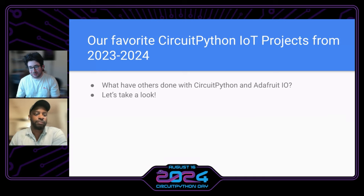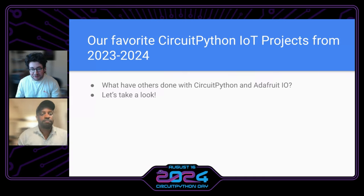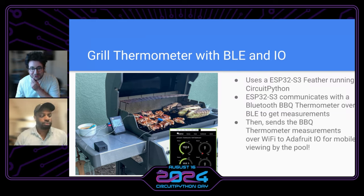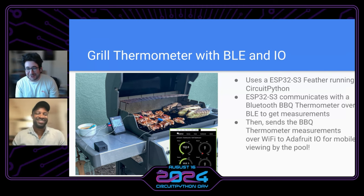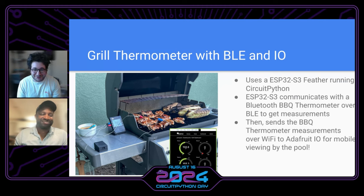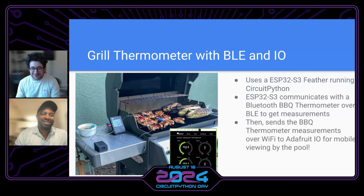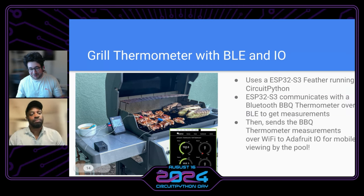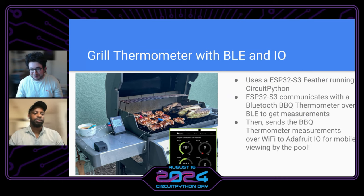We'll do our CircuitPython projects in 2023–2024. I write the Adafruit IO newsletter — it comes out every month and covers everything IoT, not just IO. So we pulled some projects. This one is from John two weeks ago — it's a grill thermometer. If you want to do a barbecue and have to go in the house a lot, this sends the measurements to Adafruit IO so you can view it from the pool or inside the house. It uses BLE and sends data from a Bluetooth thermometer to a little box with a feather in it. It intercepts the measurements and sends them out to IO. Great CircuitPython project — I'm probably going to build this one this year.